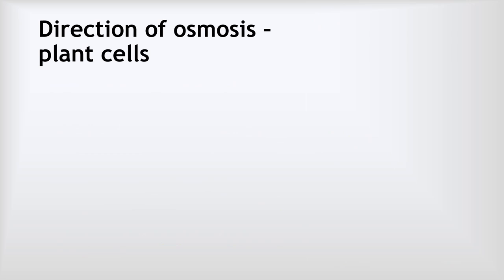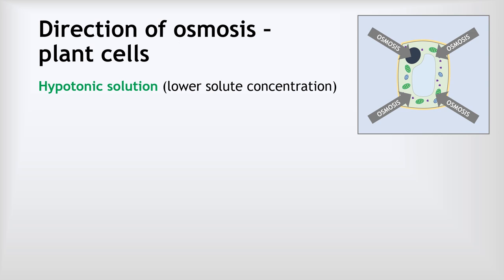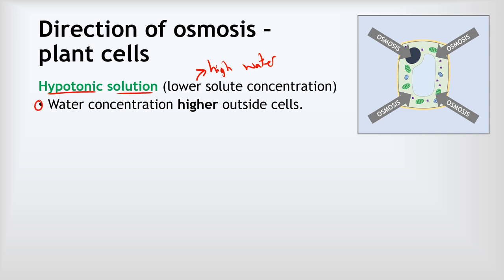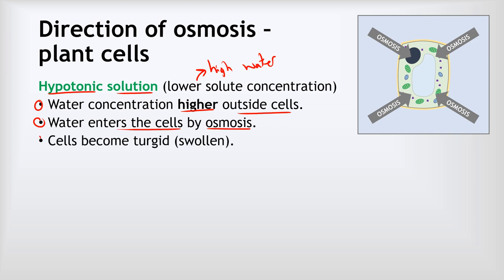Now we're going to look at how you can predict the direction of osmosis in plant cells. If we take some plant cells and put them in a hypotonic solution — that means a lower solute concentration in the solution, which means a higher water concentration — the water concentration is higher outside the cells. So water will enter the cells by osmosis and the cells will swell up. The word for that is that they become turgid or swollen. This is the kind of healthy, happy state of a plant cell — it gives a plant cell support and enables the plant to stand tall.